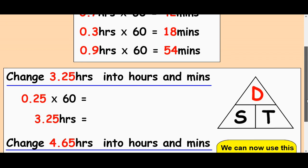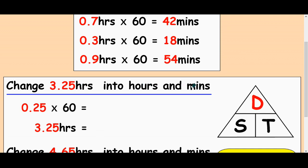Okay. Right. Let's try this one. 3.25 hours into hours and minutes. So it's 3 hours and so many minutes. So 0.25 times 60, that's 15 minutes. So this is really 3 hours and 15 minutes.